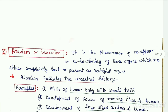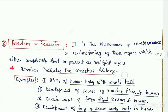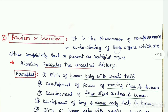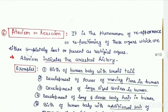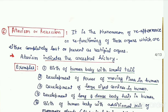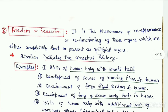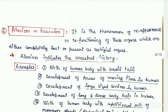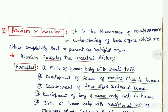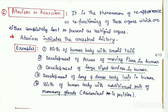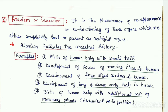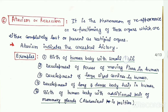The next category of evidences is atavism and reversion. Atavism is the phenomenon of reappearance or refunctioning of some organs which are either completely lost during the course of evolution or are present as vestigial organs. This atavism indicates the ancestral history of the organism. Few examples of atavism in human beings include the birth of a human baby with a small tail.